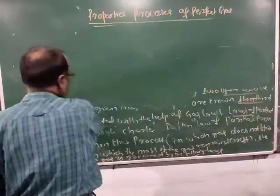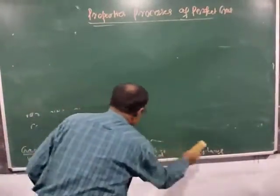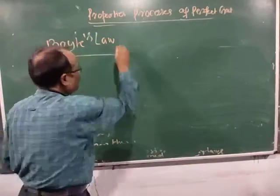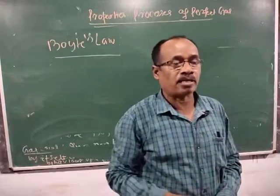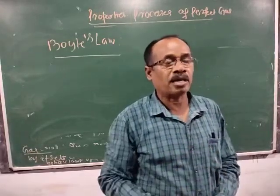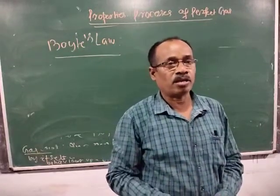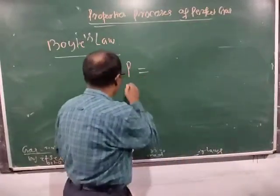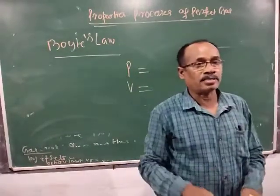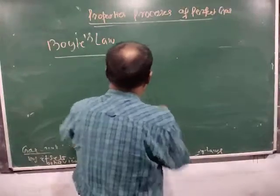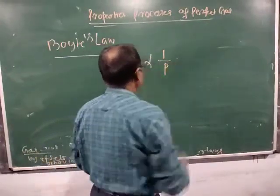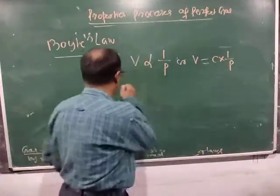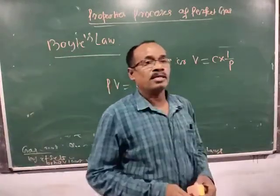First of all, I will discuss what is Boyle's law. This law states that temperature remaining constant, the volume of a given mass of a gas varies inversely as its absolute pressure. Suppose P is the absolute pressure of the gas and V is the volume of the gas. Then according to Boyle's law, V is inversely proportional to P, or V equals C times 1/P, or PV equals C, where C is a constant.